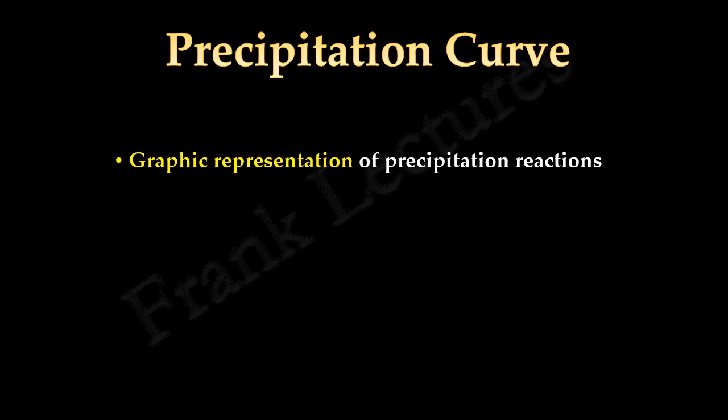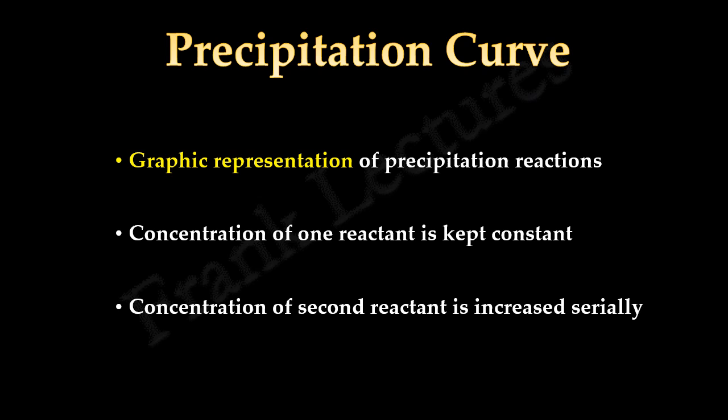Precipitation curve is a graphical representation of precipitation reactions. In these reactions, concentration of one reactant is kept constant and the concentration of second reactant is increased serially.